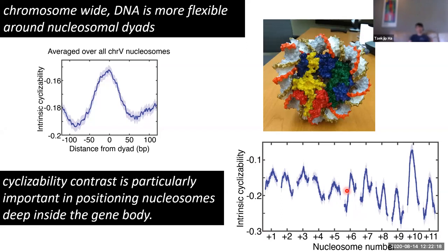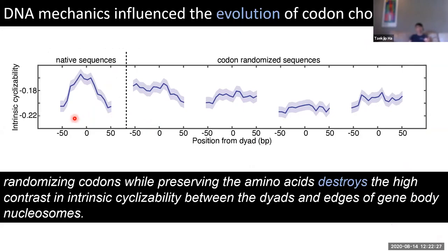The next question is: could you have achieved this nice contrast in gene body nucleosomes if you didn't care about DNA mechanics during evolution? Akash first measured native sequence bendability contrast experimentally, then randomized the codons while preserving the encoded amino acids, generated a sequence library chemically, and performed the experiment. Four different randomized libraries all show that the nice contrast between center and edge of the nucleosome disappears when codons are randomized. This means that during evolution, codon choice must have been influenced by DNA mechanics — a really exciting result.